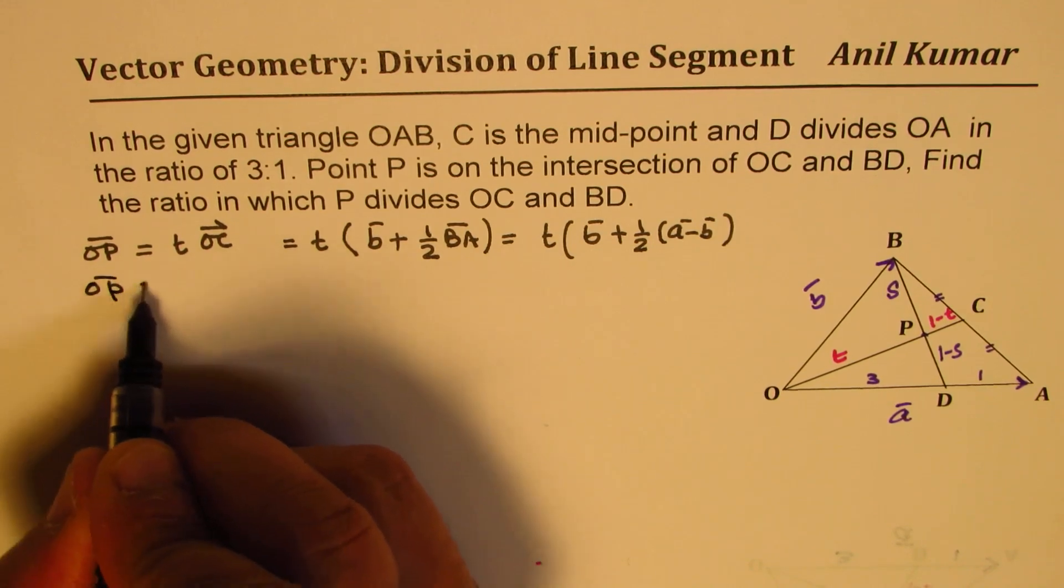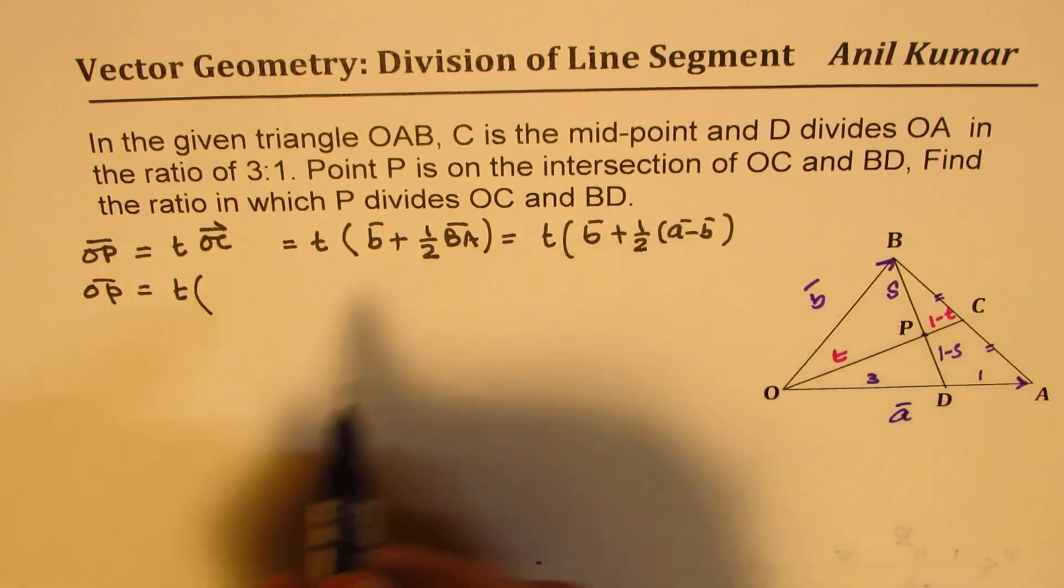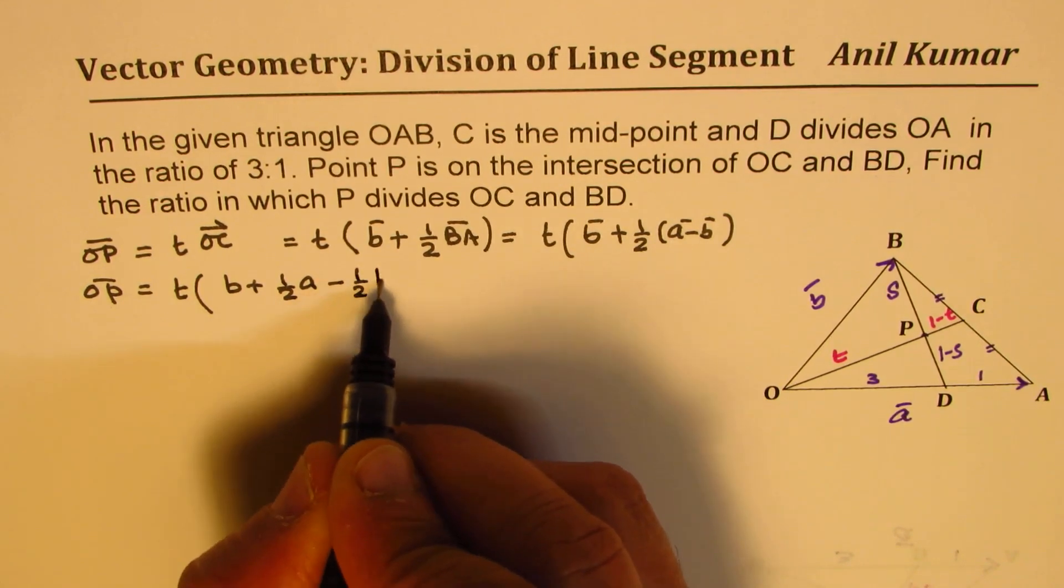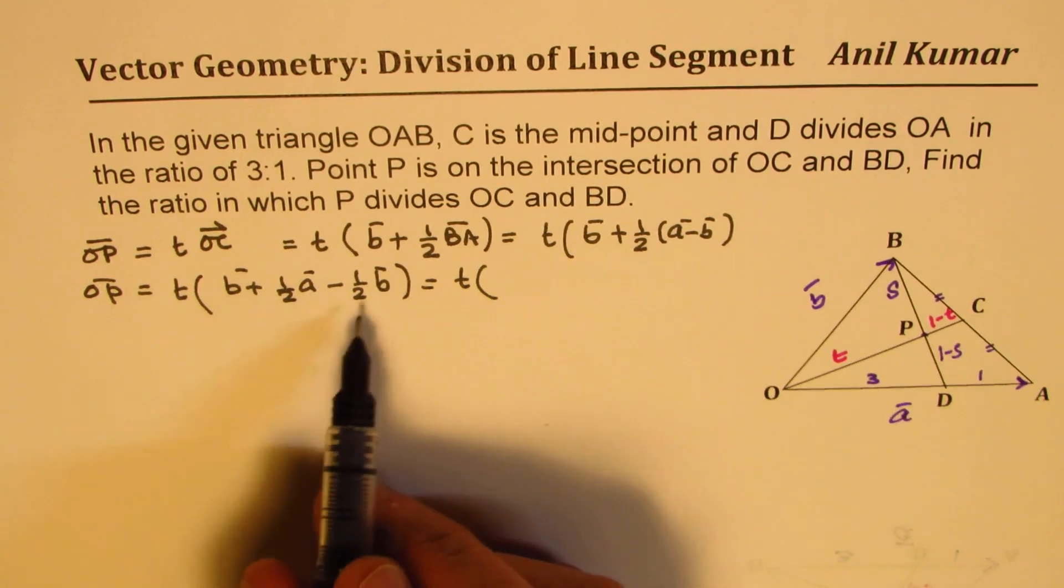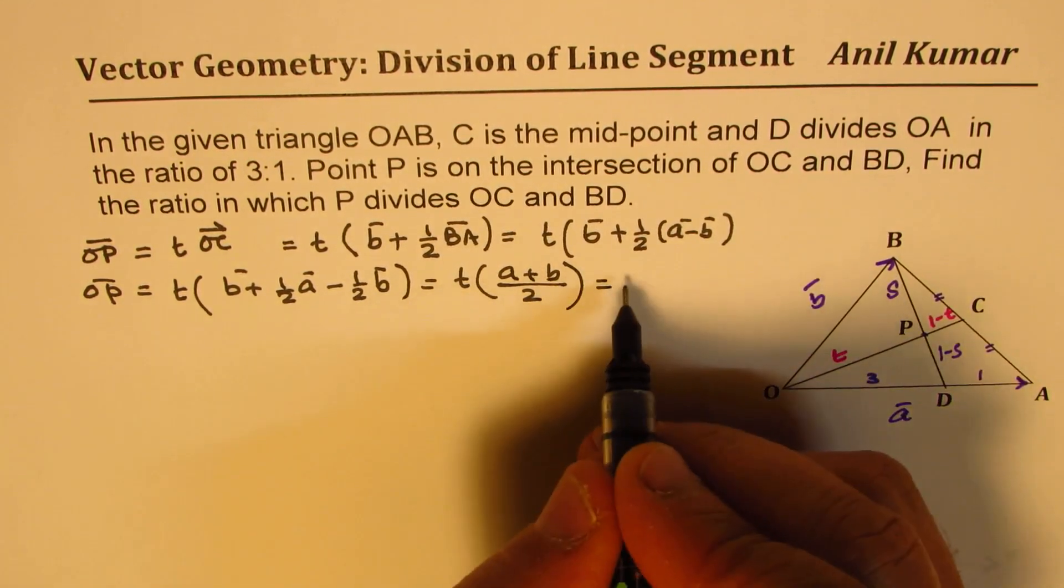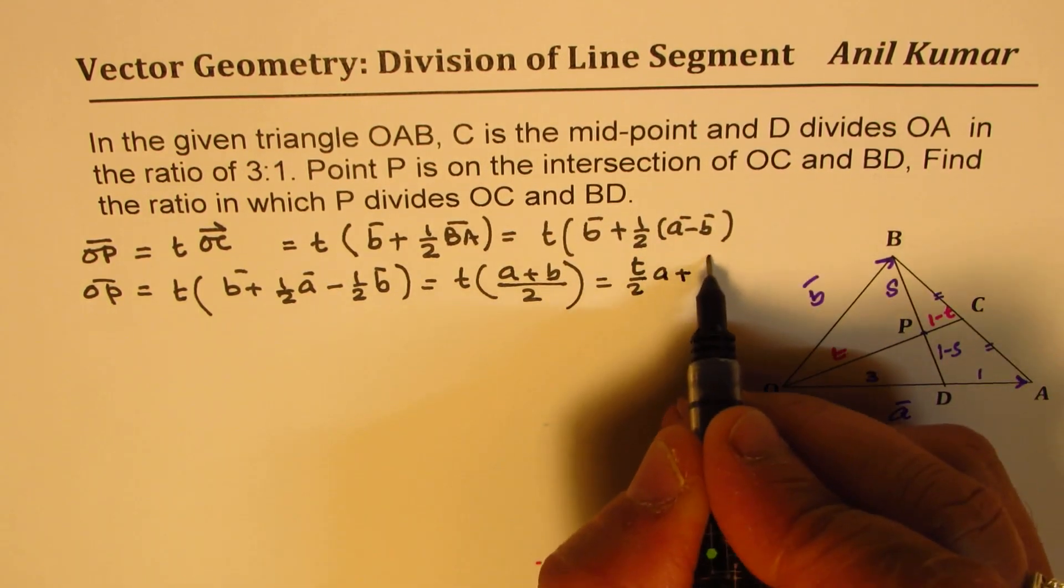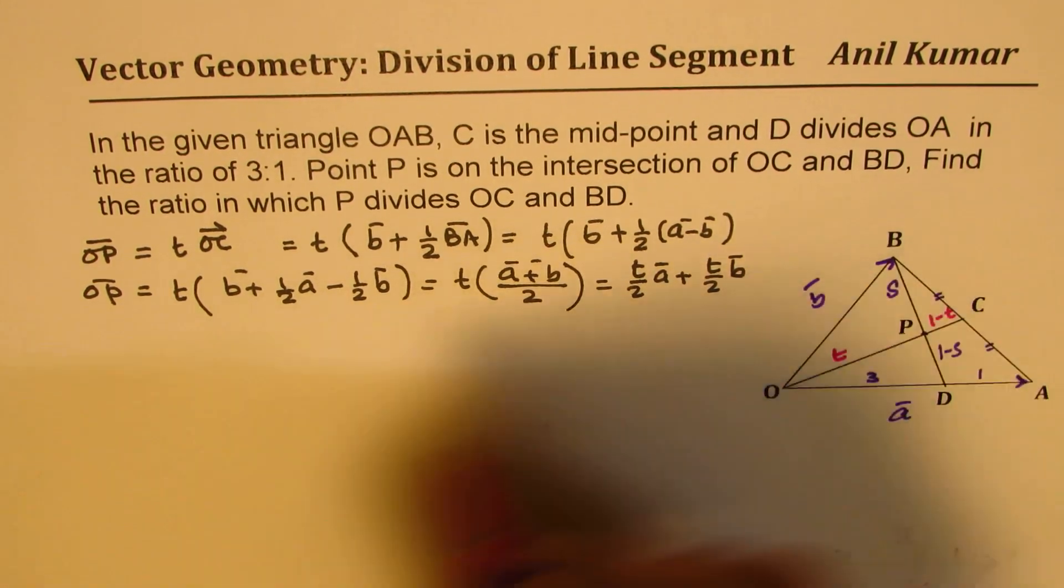So, we will just open this. So, we get OP as basically equal to T times, so if you open this up, you get B plus half A minus half B or T times A plus B by 2. So, I could write this as T over 2A plus T over 2B. In terms of vectors A and B. So, we got one of our equation. We will call this as our equation number 1.